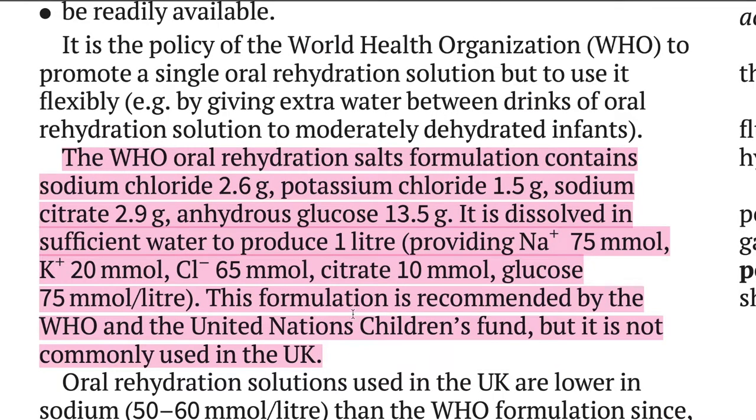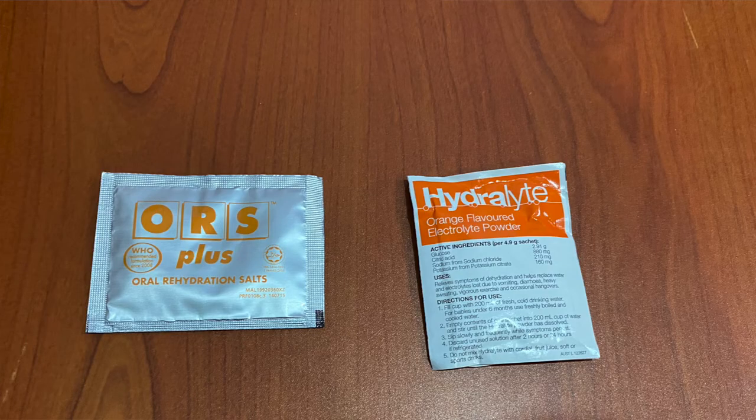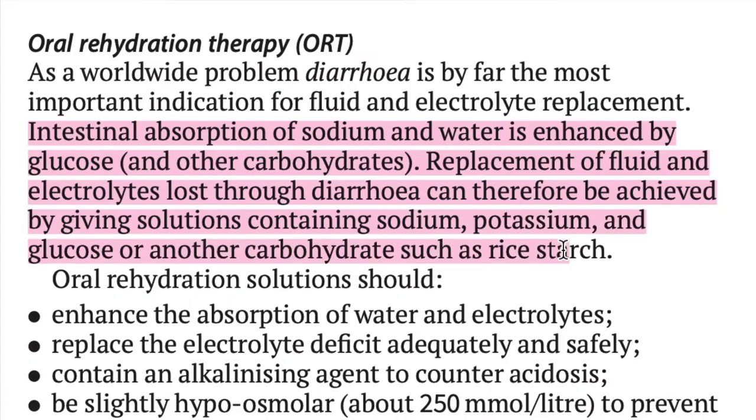The WHO has approved a recipe for oral rehydration salts and it has the following: sodium chloride 2.6 grams, potassium chloride 1.5 grams, sodium citrate 2.9 grams, and anhydrous glucose 13.5 grams. These oral rehydration salts are what you would usually see in pharmacies whenever you are given them. And as a fun fact, the glucose in the mixture actually helps in the reabsorption of water and sodium into your intestines, making the absorption of water far easier.